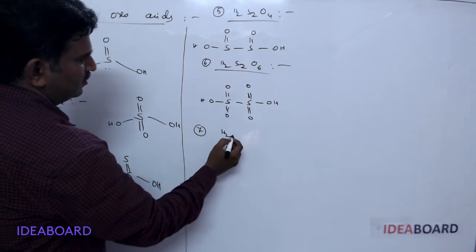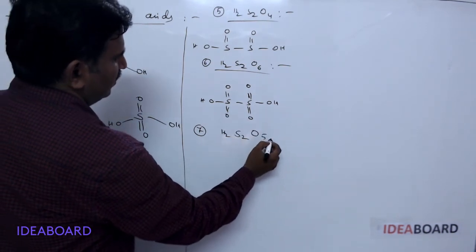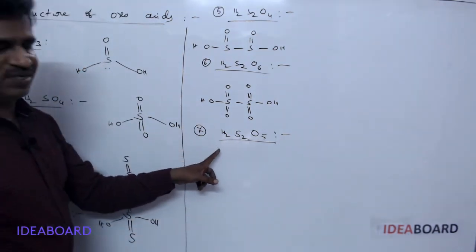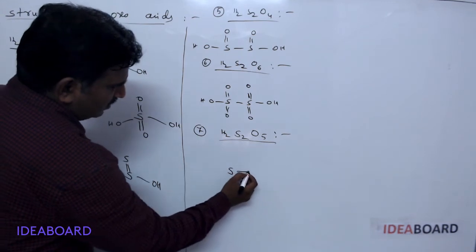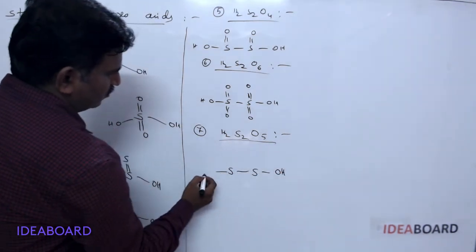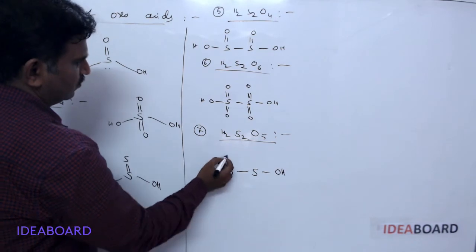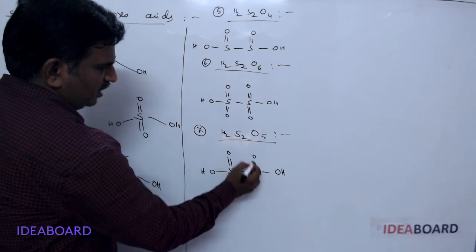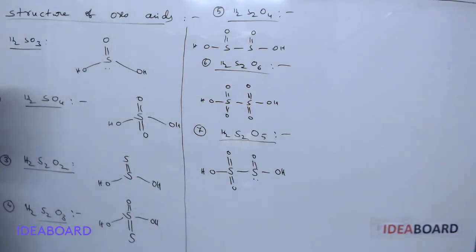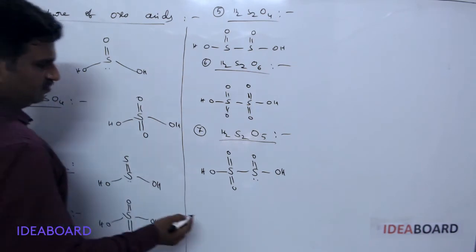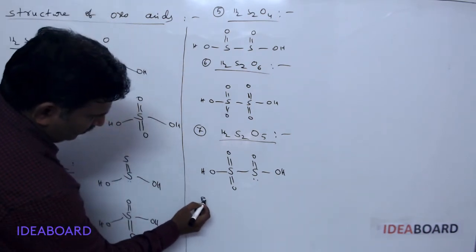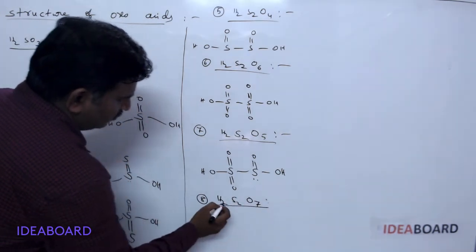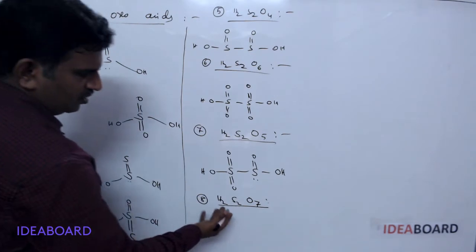The seventh structure is H₂S₂O₅, called pyrosulfurous acid. In pyrosulfurous acid, there is S double bond S, one OH group and one OH group, and three more oxygen atoms — two oxygens on one sulfur and one oxygen on the other, with a lone pair on each sulfur.